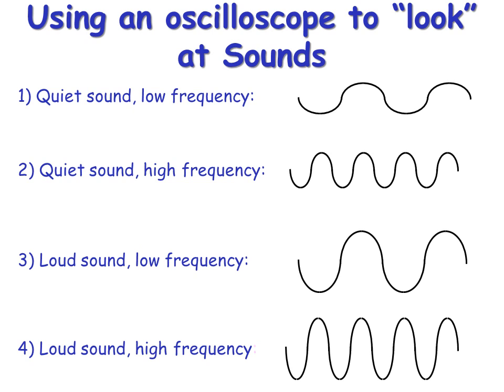We can look at sound waves on a device called an oscilloscope. This displays the waves as a transverse wave. There are two features of the wave: the height of the wave, which is its amplitude, and how many waves there are in a specific time, which is called frequency.